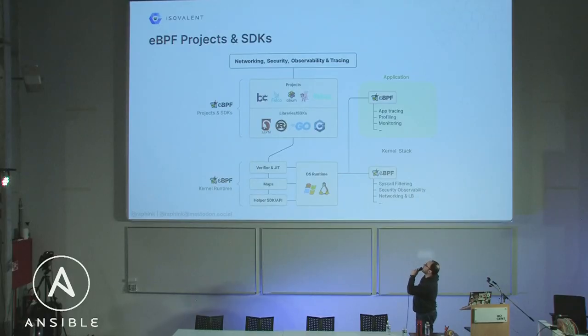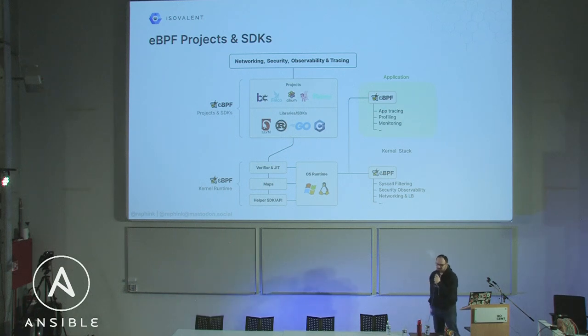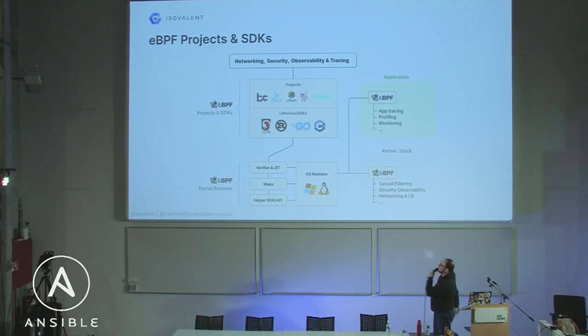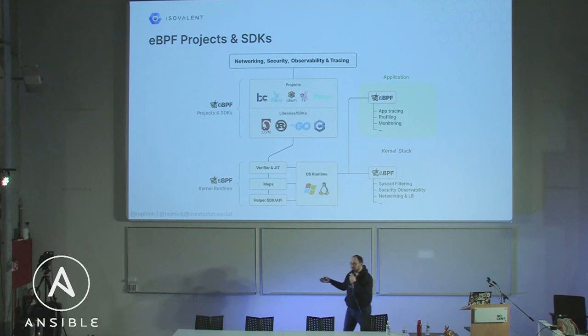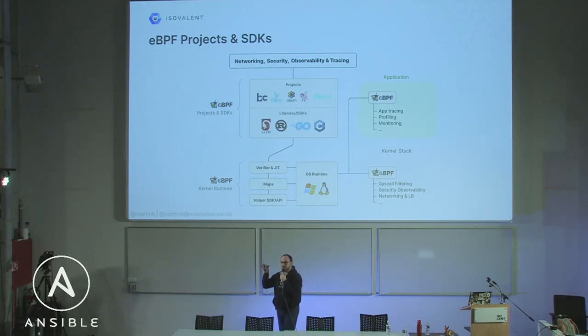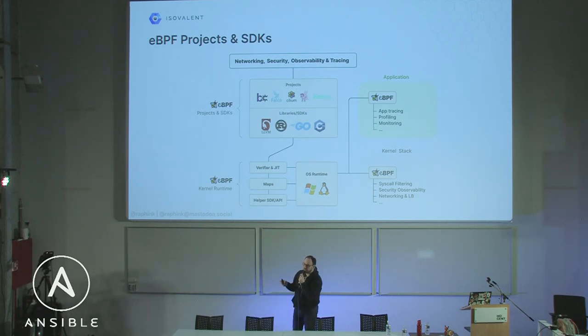There are lots of projects using eBPF — Cilium, BPFTrace, Katran from Facebook used as a load balancer, Falco for security, BCC — most depending on existing SDKs to generate programs and inject them into the kernel. What's really interesting is that once in the kernel, these programs are independent. What Cilium does when injecting programs to manage routing or network policy is very similar to what another CNI plugin does with IP tables rules — once injected, even if Cilium crashes, the rules keep working. It's just kernel code being executed.